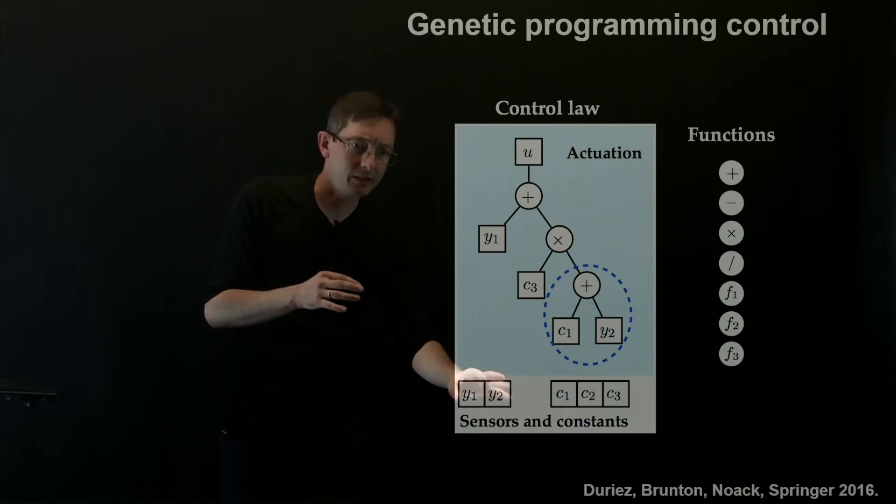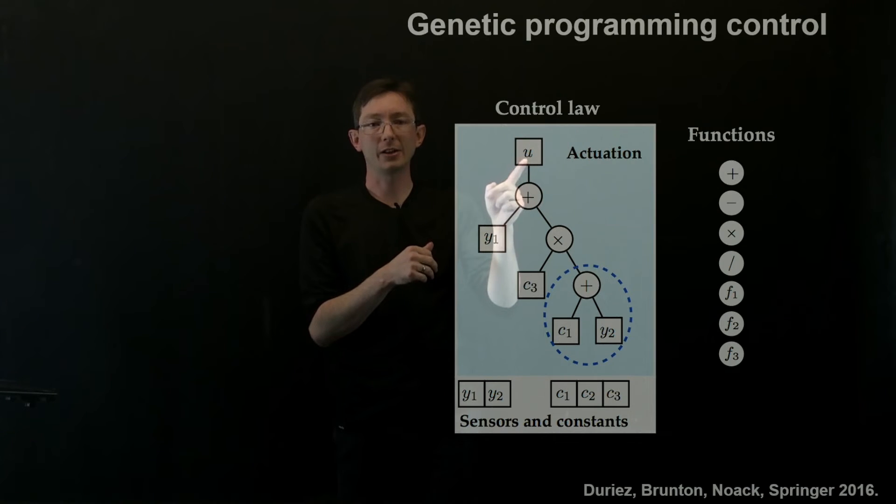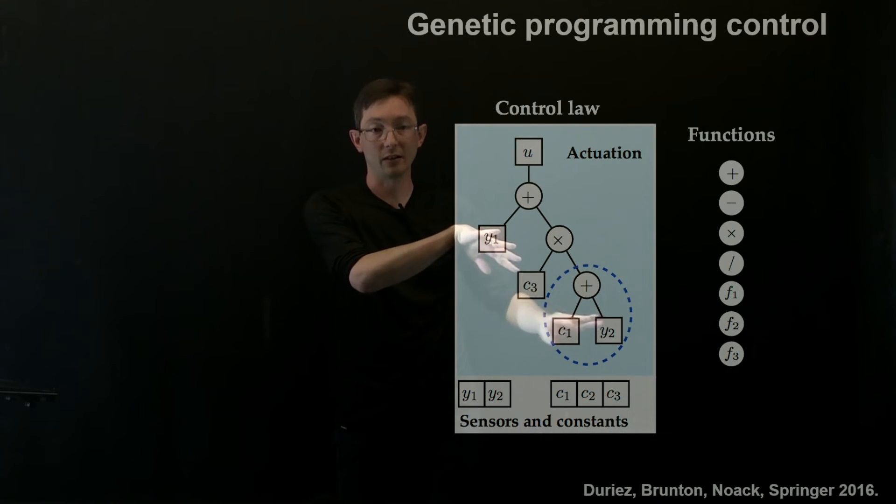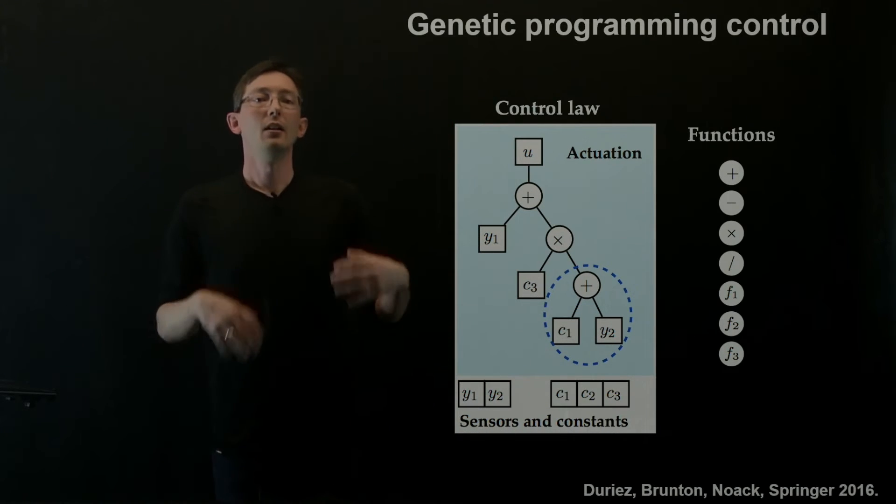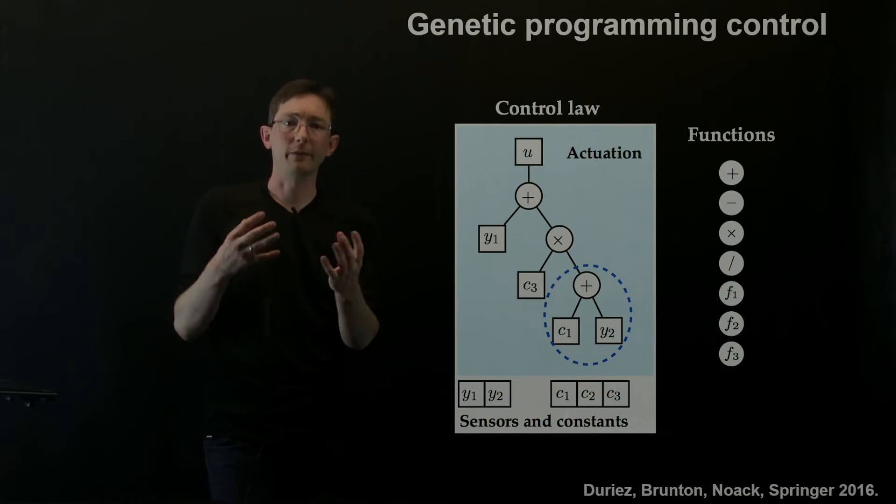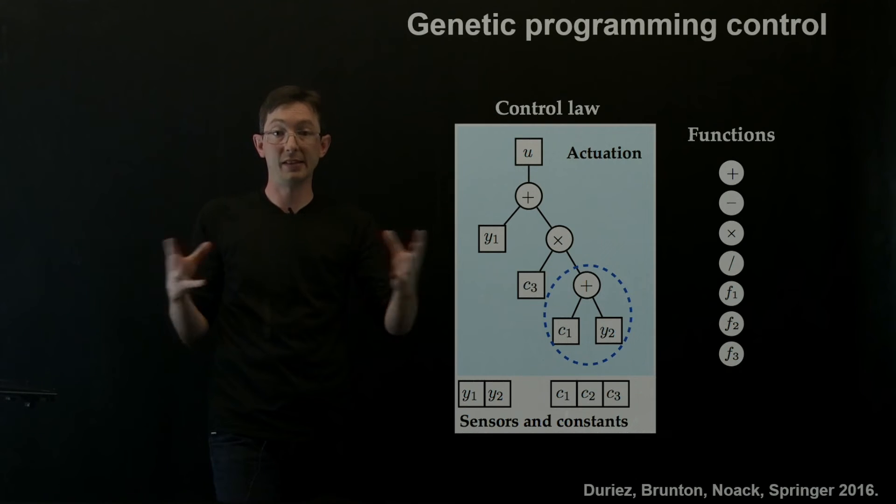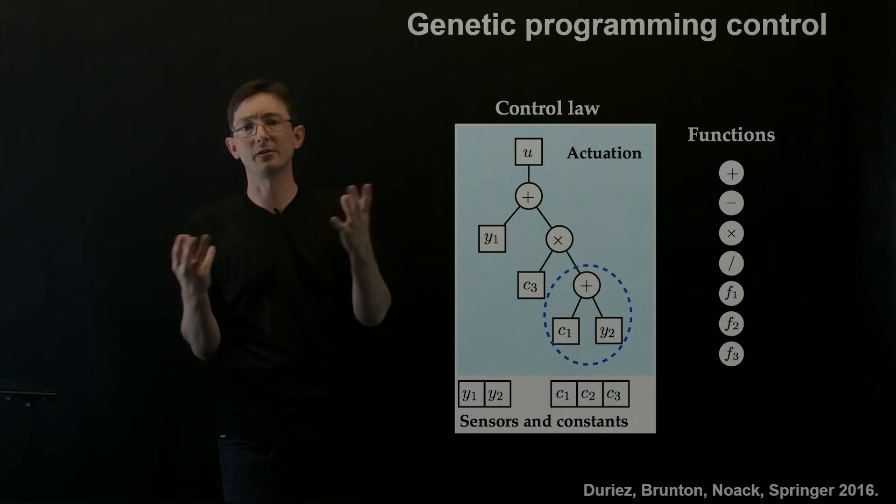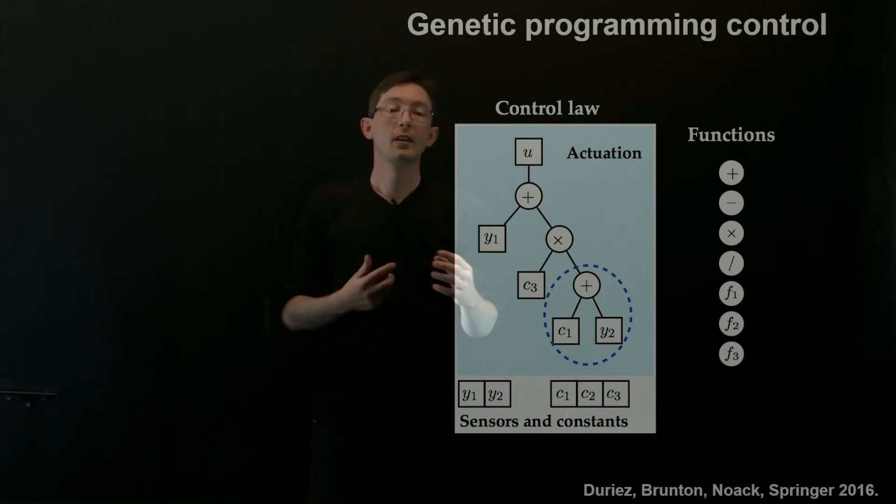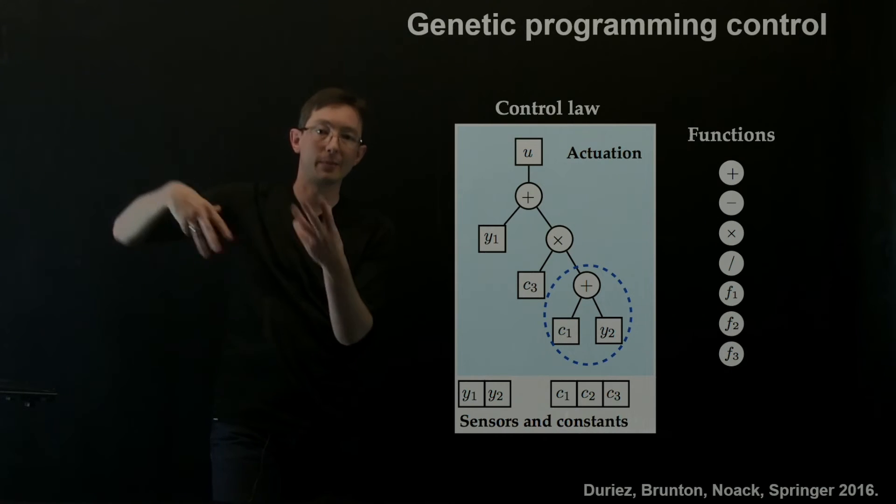So something else to point out, you'll notice that this is an instantaneous control law. The actuation signal is instantaneously responding to this particular instantaneous sensor measurements and constants, and that's a little strange because we know from the control bootcamp, for example, that if I have limited measurements that don't measure the full state of my system, and in a high-dimensional example like a fluid flow, it's very unlikely I'm measuring everything, then I might need a Kalman filter to estimate the full state of my system for effective control.